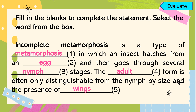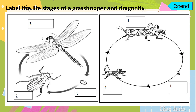For your assignment, label the life stages of a grasshopper and a dragonfly. Here is the answer key: for grasshopper, the stages are egg, nymph, and adult. For dragonfly, we have also the same answer — egg, nymph, and adult.